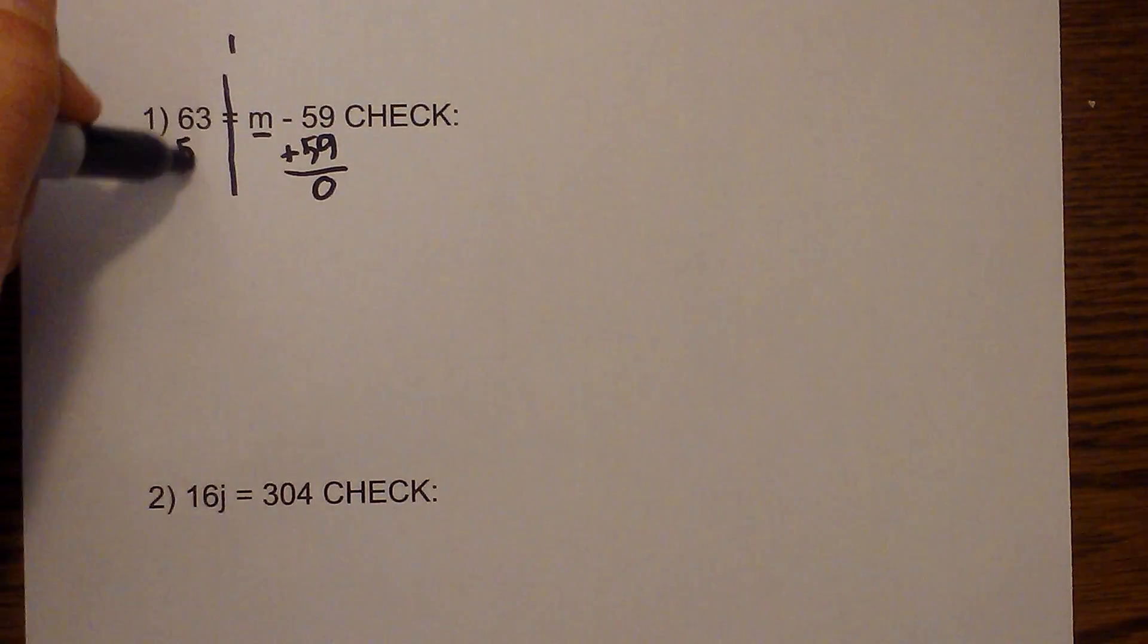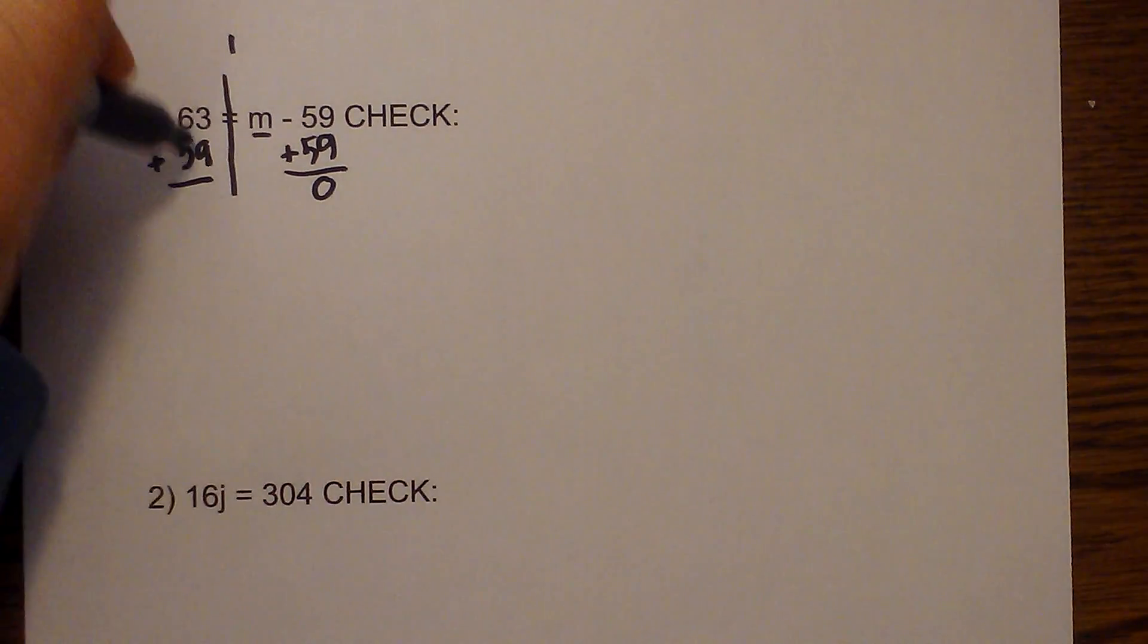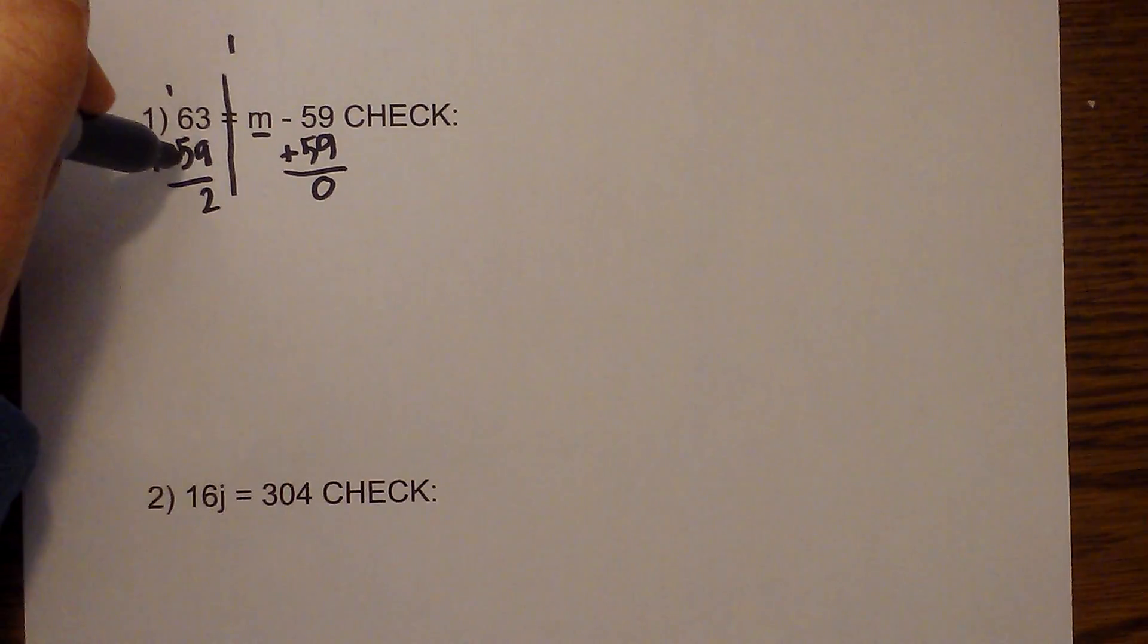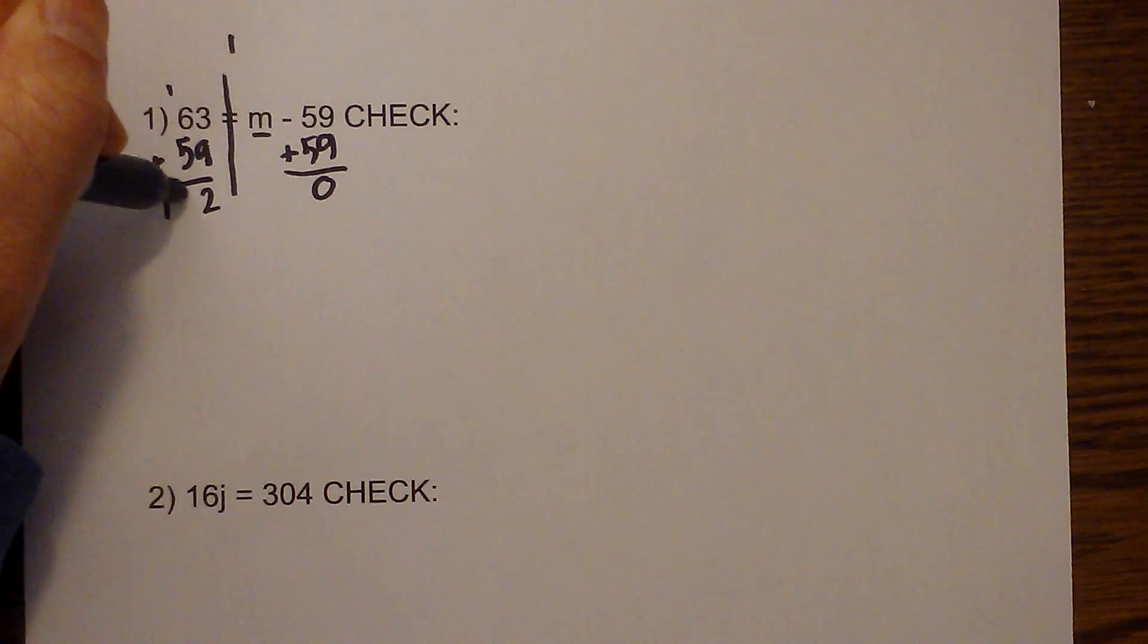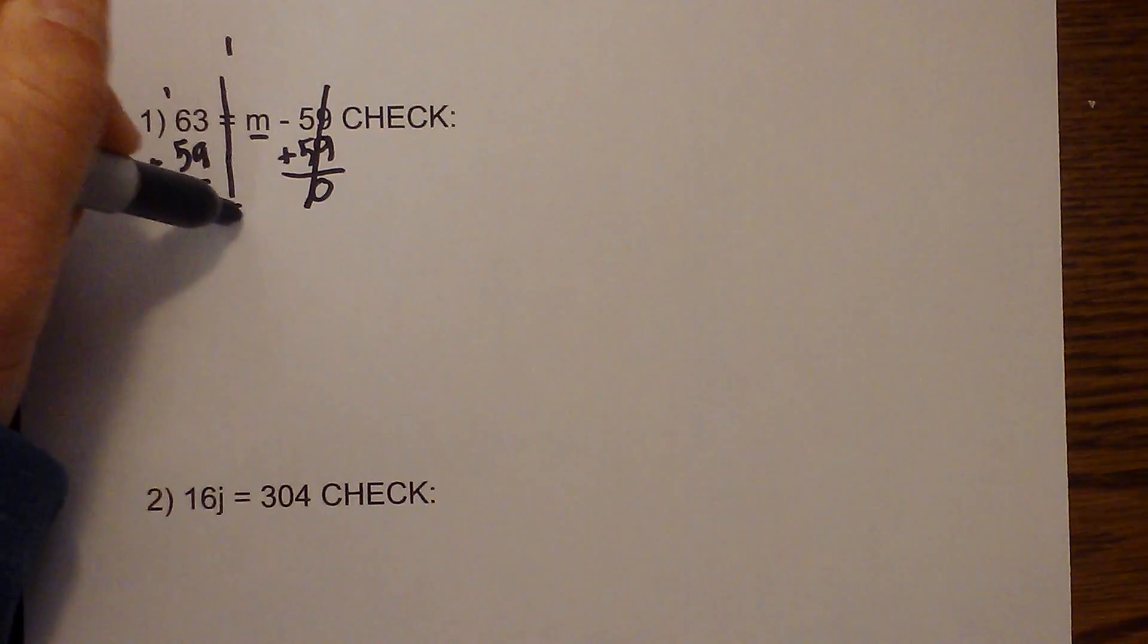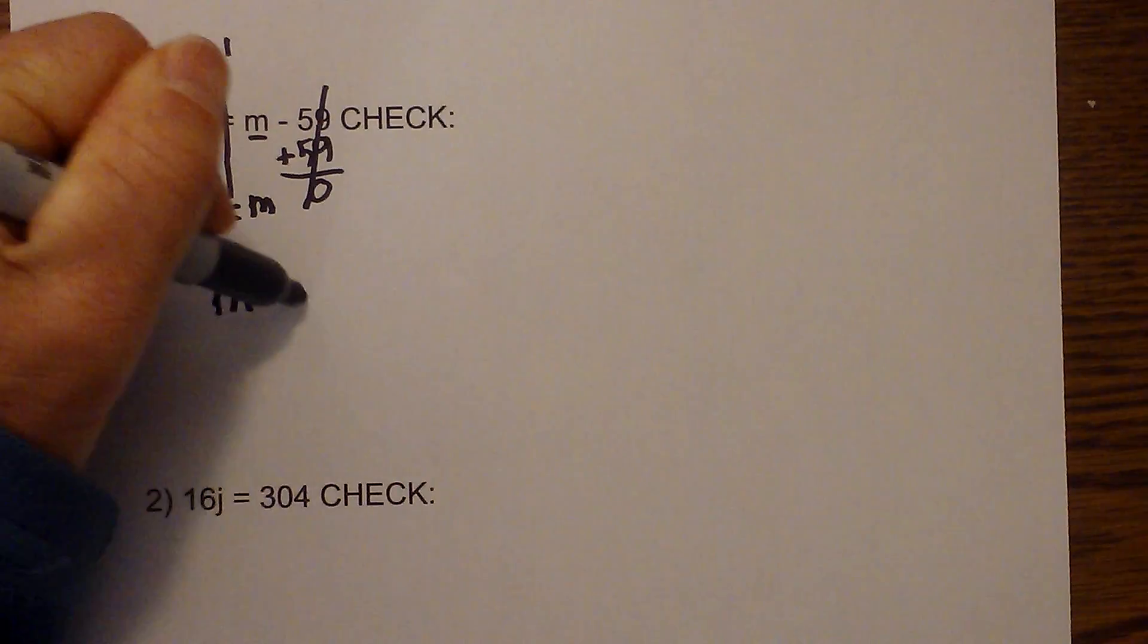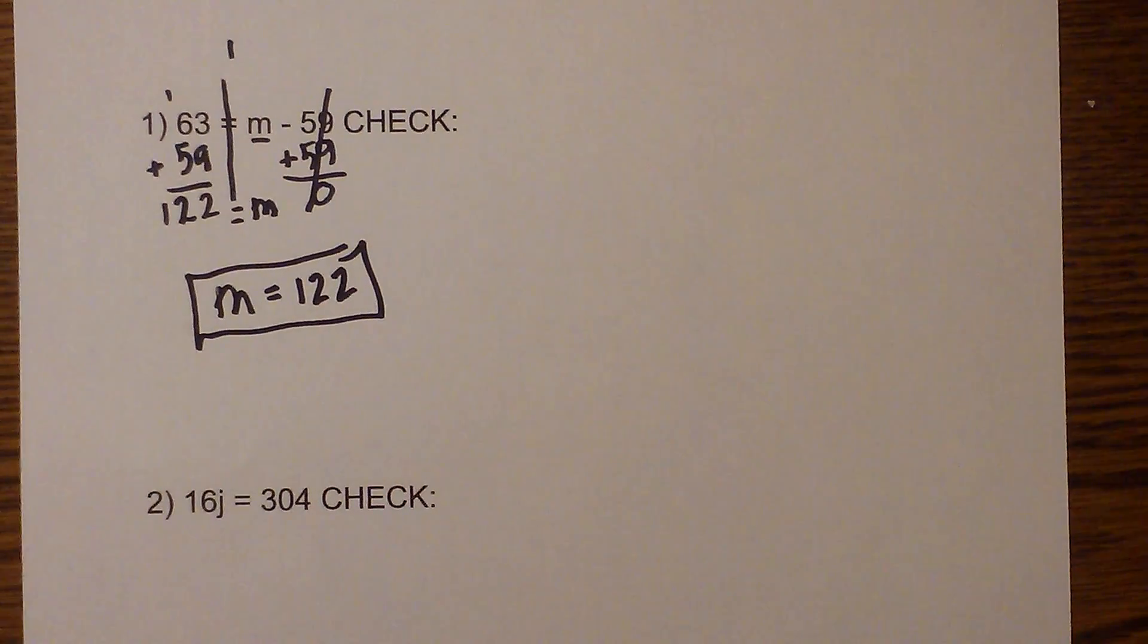So I'm going to add 59 here. These cancel and then I'm going to add 59 on the other side. So when I do that, that gives me 9 plus 3 is 12, carry the 1, that would be 122. These cancel equals m. So the answer is m is equal to 122 and I'll box it.